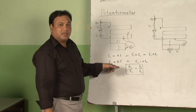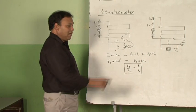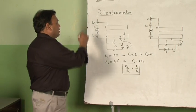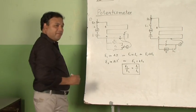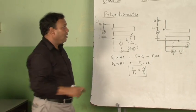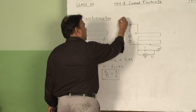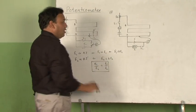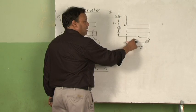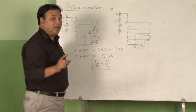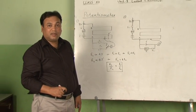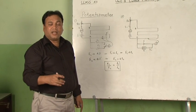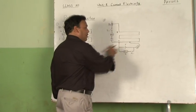This is called the comparison of the EMFs of two primary cells using the potentiometer — this is the first application and an important one. In the second application, the auxiliary circuit remains the same, but now we are determining the internal resistance of a cell.